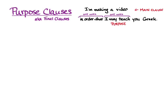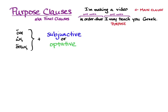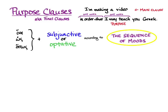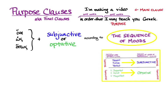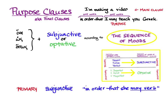So how does Greek do it? First, you need the conjunction. Hina, hos, or hopos are the Greek conjunctions for 'in order that.' You pick one of those and add a verb in either the subjunctive or the optative mood, and you decide which mood to use according to the sequence of moods. I'll put the chart of sequence of moods right down here. In primary sequence, you choose subjunctive for purpose clauses and translate 'in order that she may verb.'